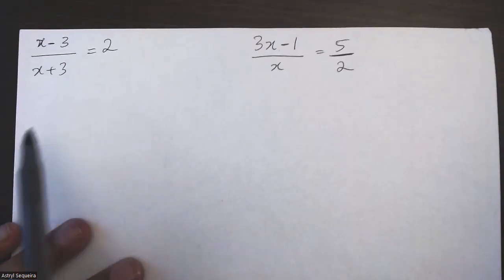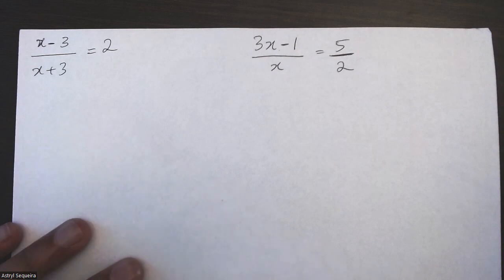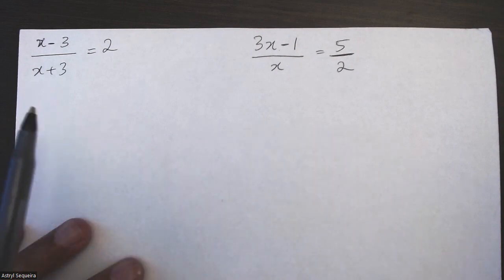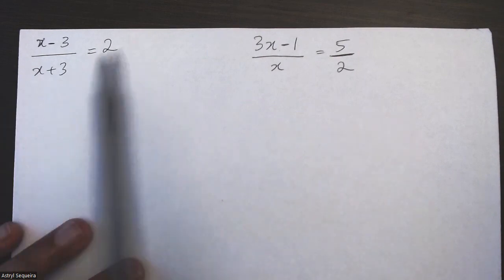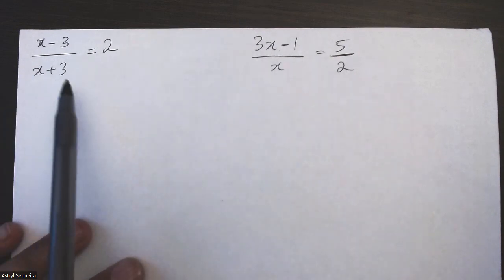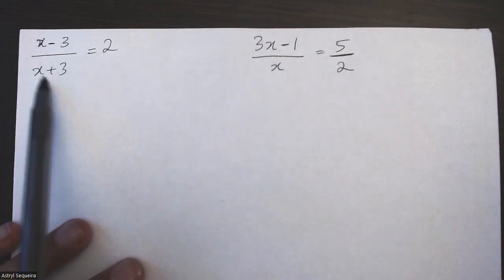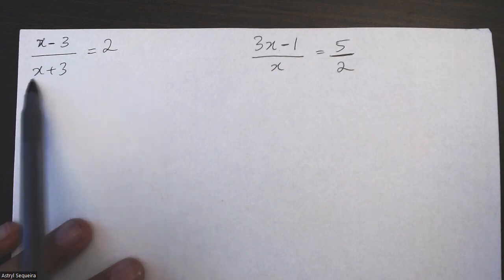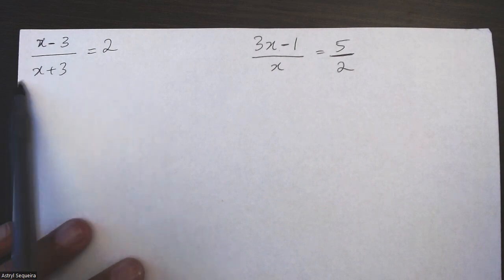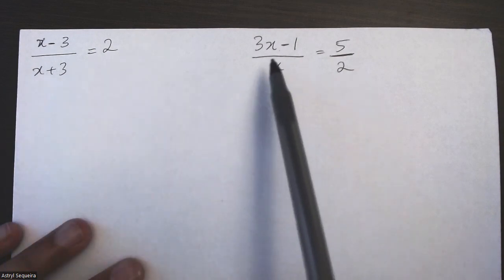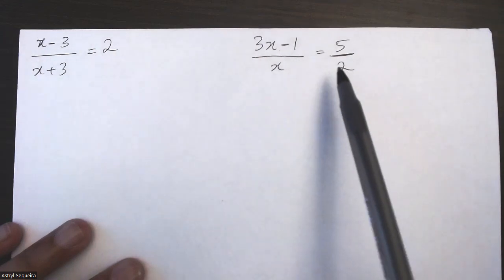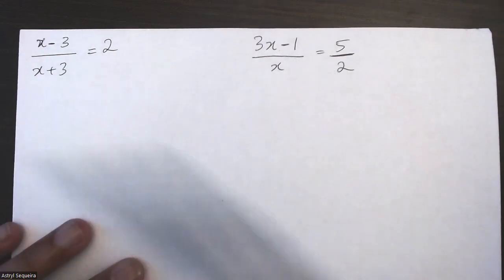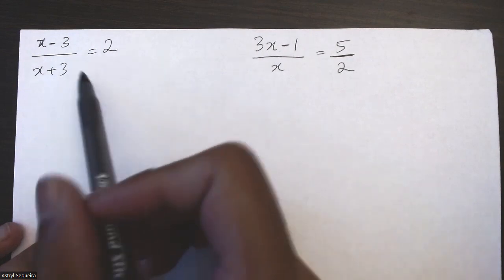In this video I want to solve these rational equations. These examples already have a common denominator on both sides. This one just has one denominator on one side, this one has a common denominator on the left and right with no denominator, and here I have a common denominator on the left and on the right.